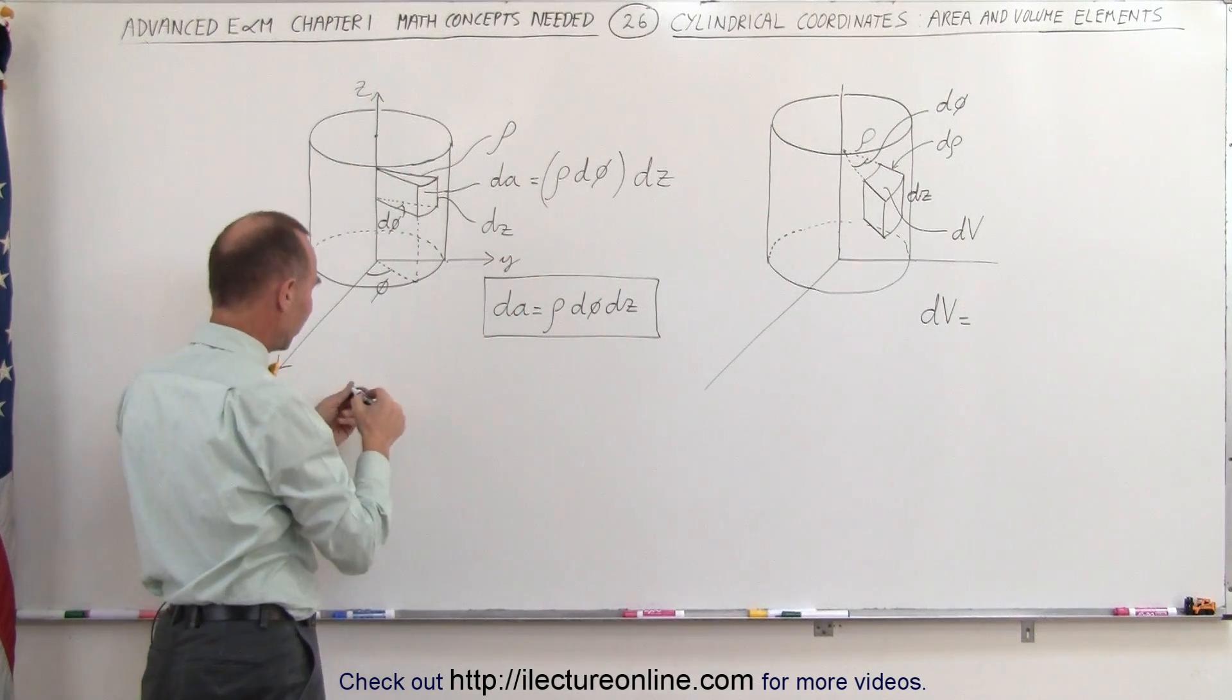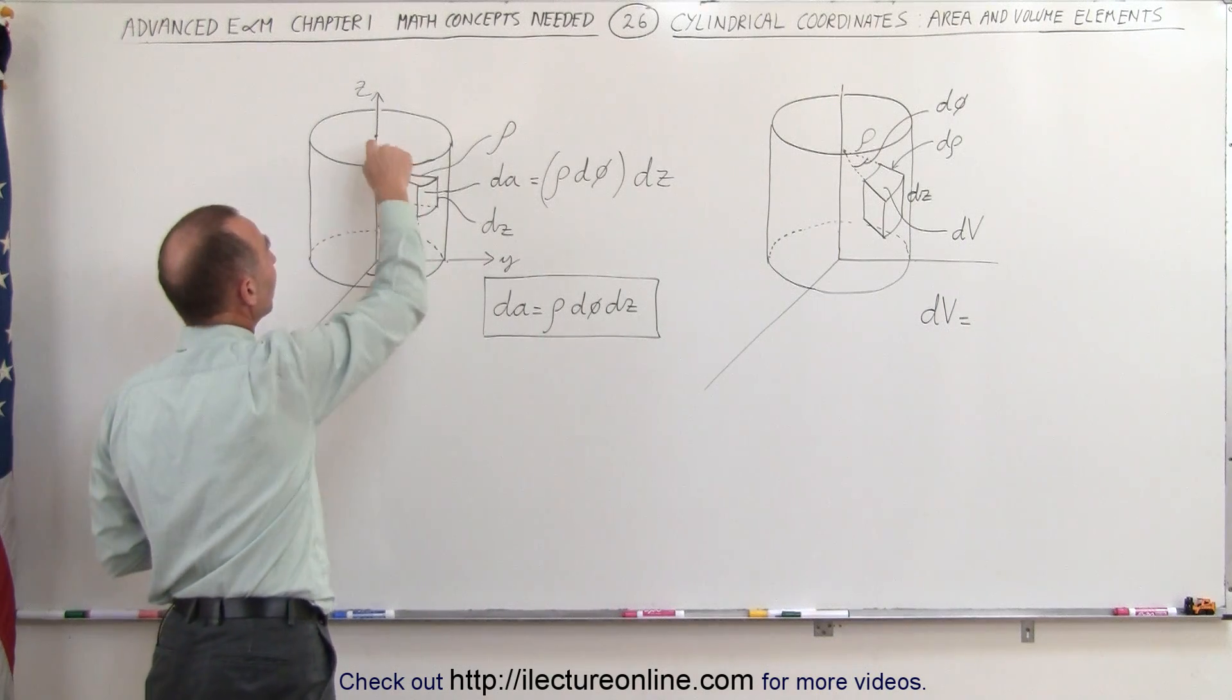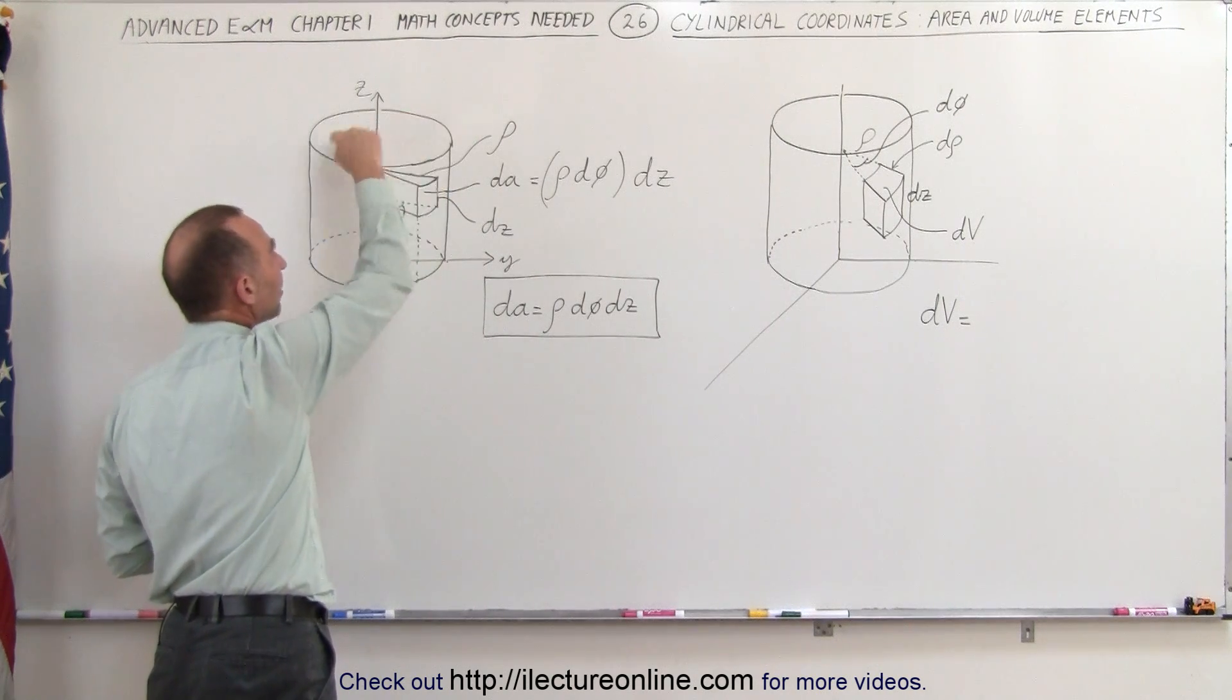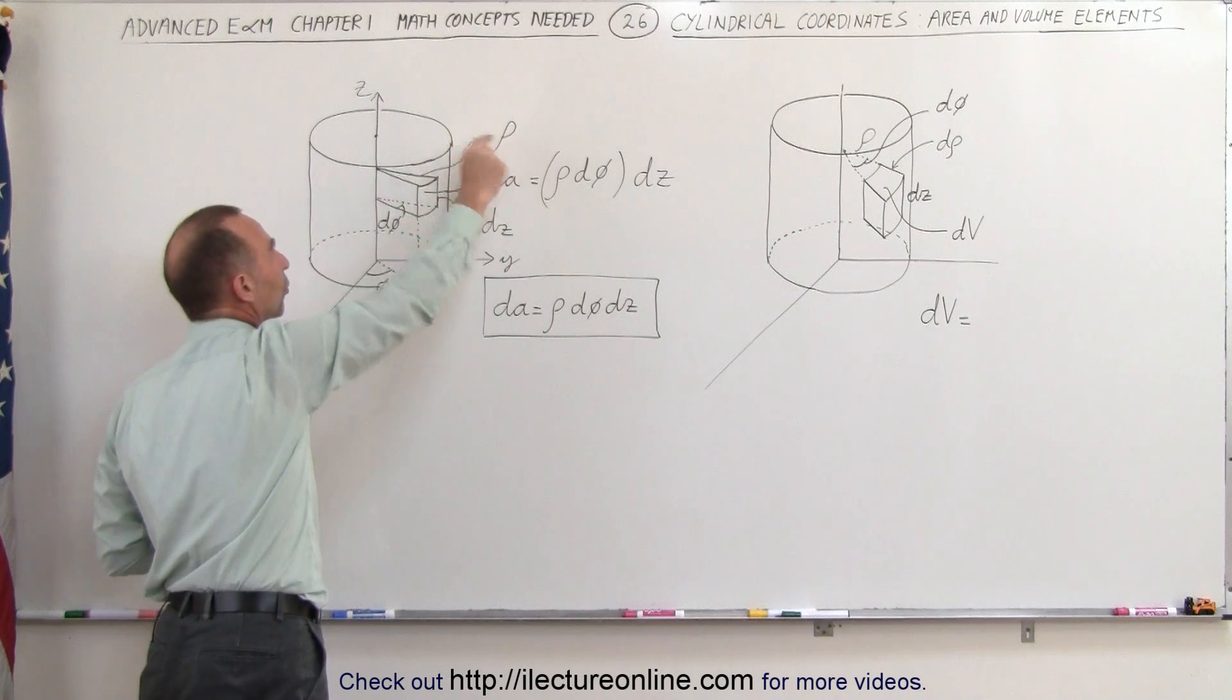this would be your y-axis, and notice the distance from the z-axis to the edge of the cylinder, that's the distance rho.